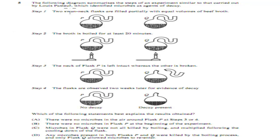The next question: the following diagram summarises steps of an experiment similar to that carried out by Louis Pasteur, which identified microbes as an agent of decay. Which statement best explains the results obtained? D. Any microbes present in both flask P and flask Q were killed by the boiling process, and only flask Q allowed microbes to re-enter. Pause the video and attempt the question.